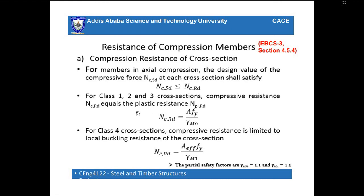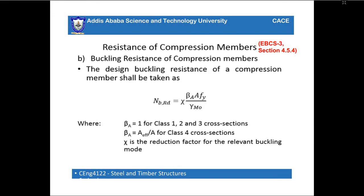The compressive resistance equals the plastic resistance. The design buckling resistance of a compression member is calculated using the formula involving the reduction factor χ, the β value — which is 1.0 for Class 1 to 3, and the ratio of effective area to gross area for Class 4 — and the yield strength divided by the partial safety factor γM1. χ is the reduction factor for the relevant buckling mode.